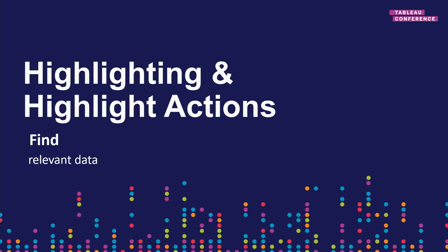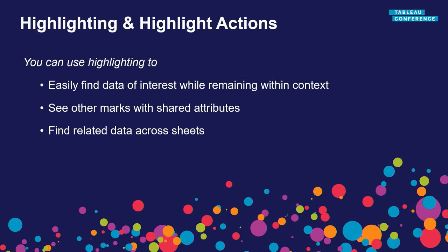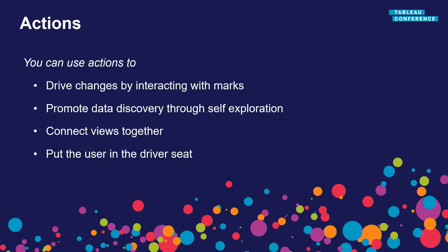Let's recap. Highlighting is useful if your user wants to find certain data within a sea of other data without leaving the context — none of the marks actually disappeared, they just faded into the background. It's also very easy to select marks of similar attributes through the legend. Actions are useful for driving change across multiple views: you can select in one view and highlight in another with highlight actions. You will see actions later on in this talk a lot. But for now, let's move on to our next topic, filters.